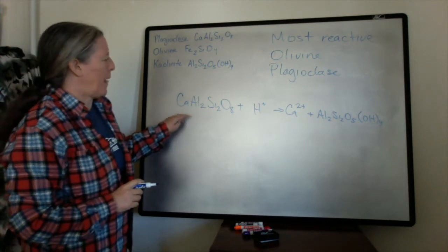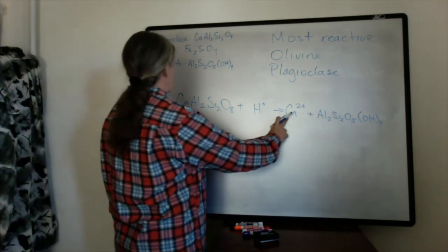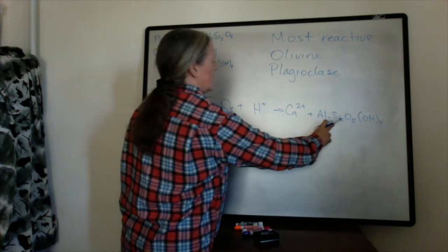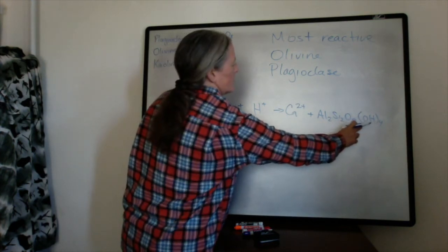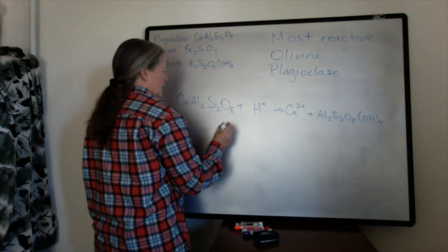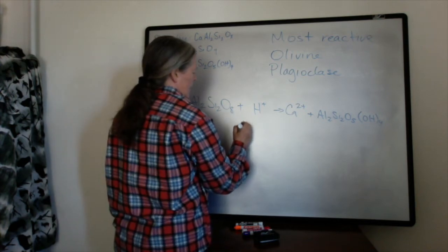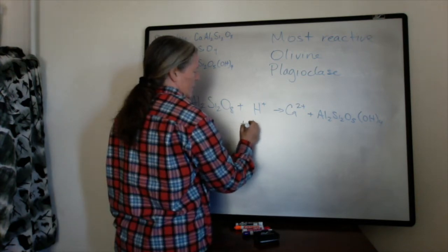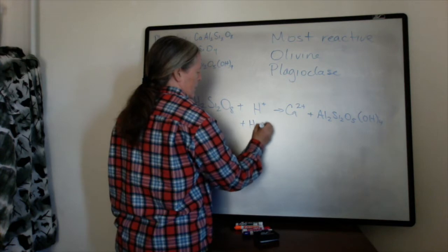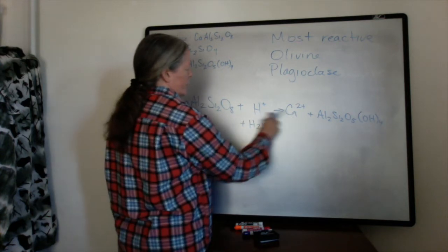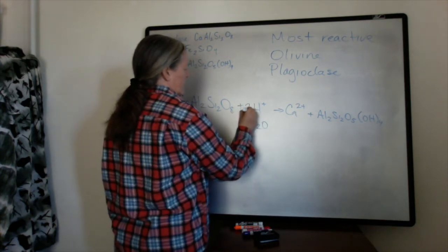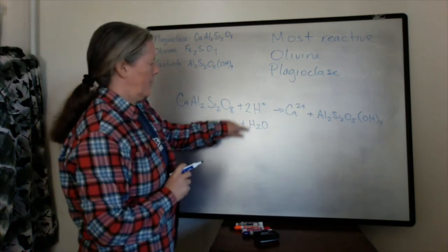So I need to balance this equation. I have my calcium's okay, my aluminum's okay, silica's okay. I have nine oxygens on this side and only eight on this side, so I need to add a water. And I have two charges on this side and only one on this side. And now we have four protons.